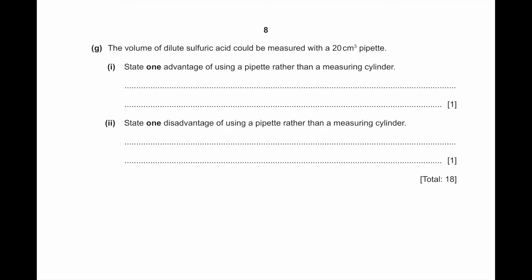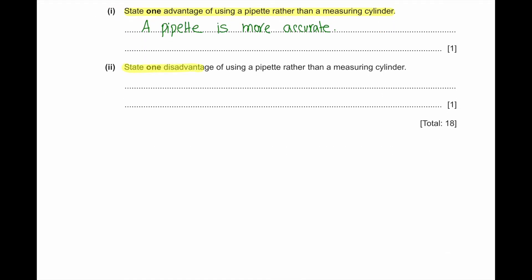Part G: The volume of sulfuric acid could be measured with a 20 cm³ pipette. State one advantage of using a pipette rather than a measuring cylinder — a pipette is more accurate. State one disadvantage — using a pipette is much slower than a measuring cylinder.